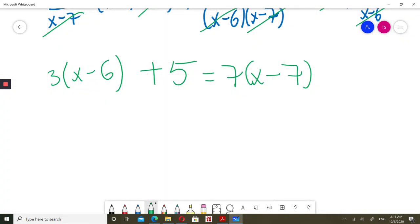So I will multiply out brackets. So 3x minus 18 plus 5 equals 7x minus 49.